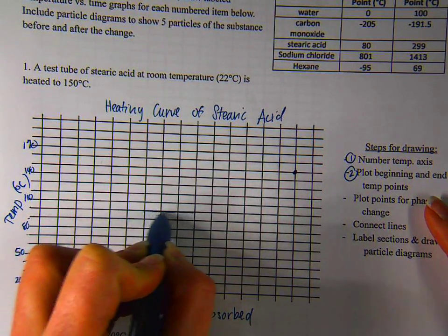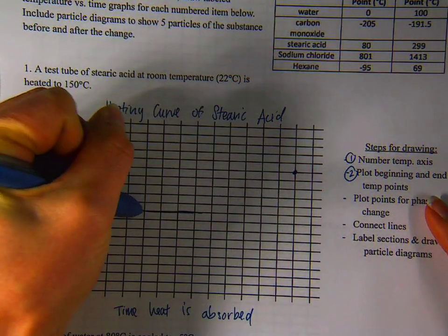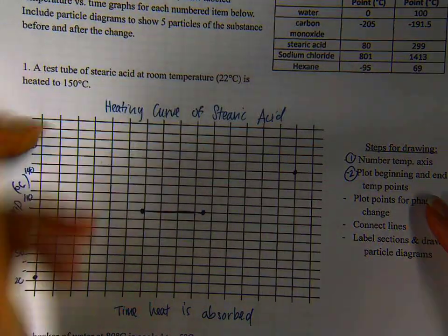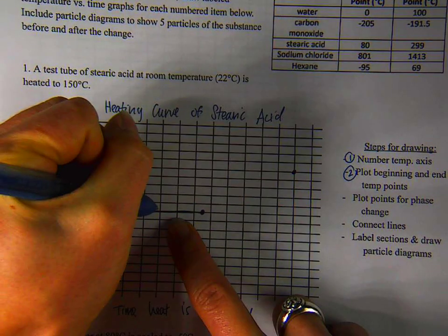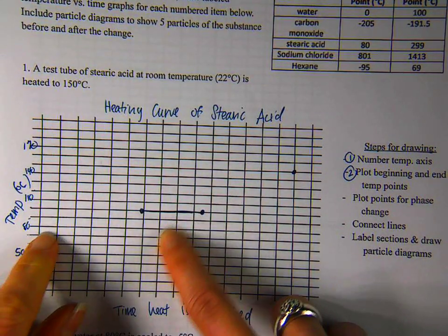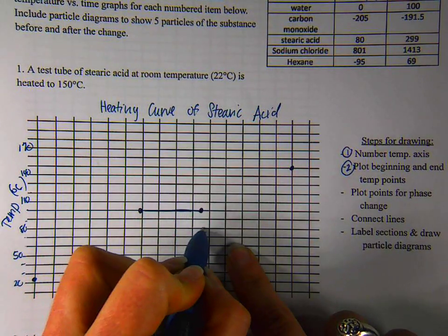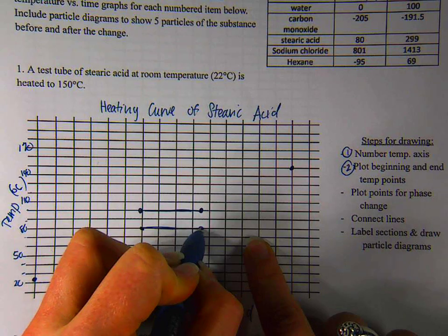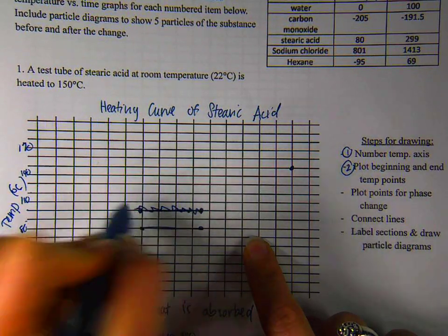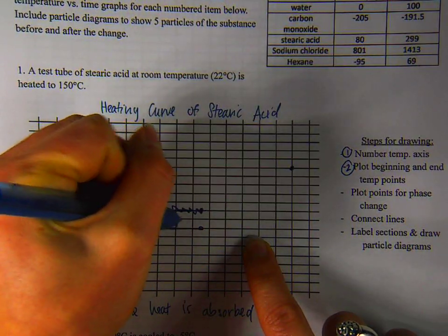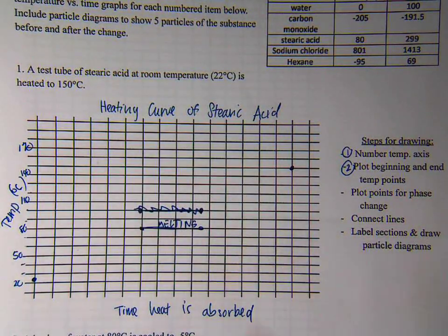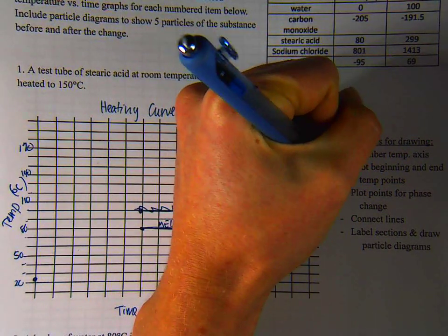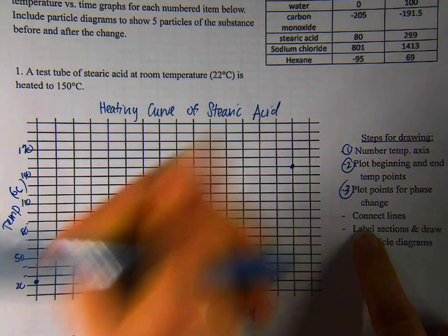And I'm going to draw this flat section. And I'm going to put two points on either side of it. I know that this is where my melting happens. And it's at 80 degrees. I drew it a little too high on my graph. So I'm going to move it down here. This is incorrect. I'm going to write melting on top of this. Just so I know what's happening here. Now that I've got my points plotted for the phase change.